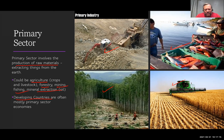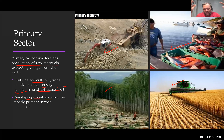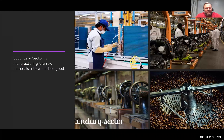Generally speaking, developing countries — the poorer countries — derive a higher percentage of their economic output from the primary sector. This has a lot to do with the technology available, since today's manufacturing requires higher-level technology. That said, wealthy countries certainly have primary sector activity too — the US has plenty of it.